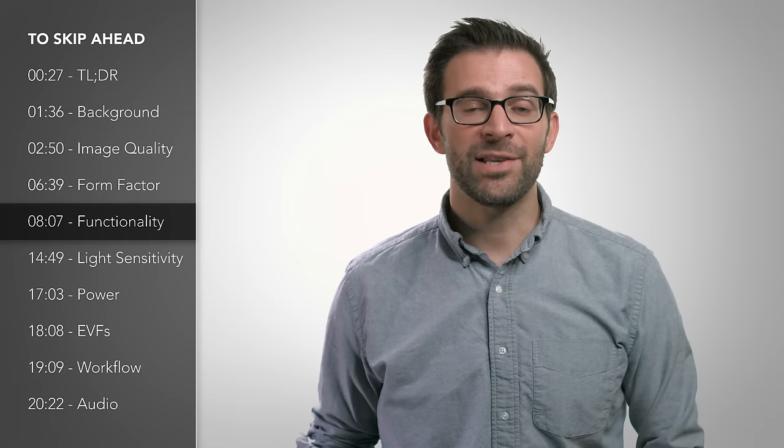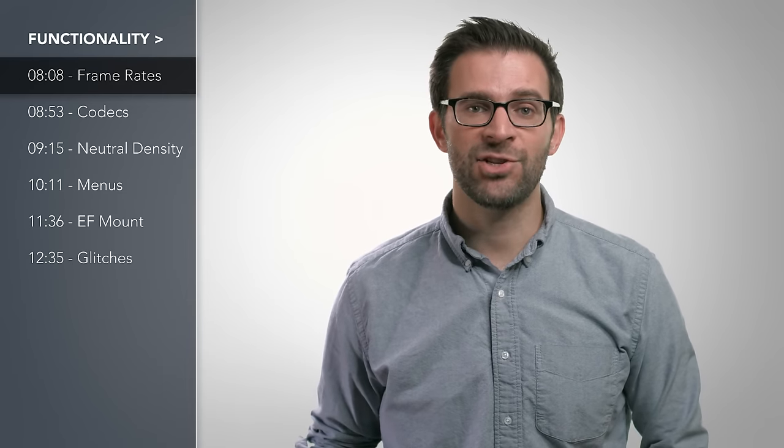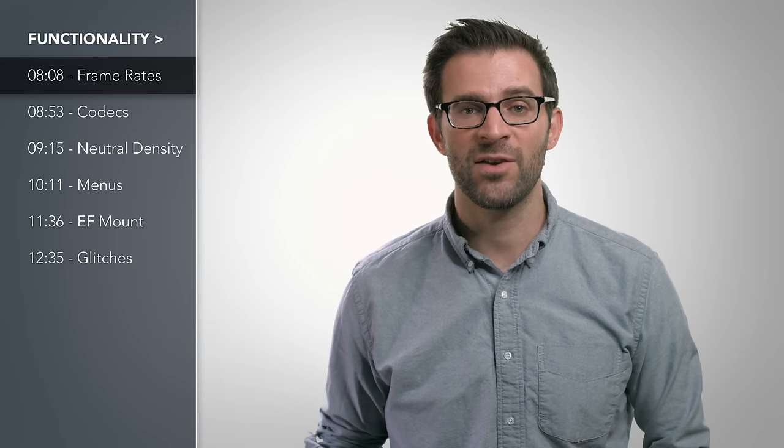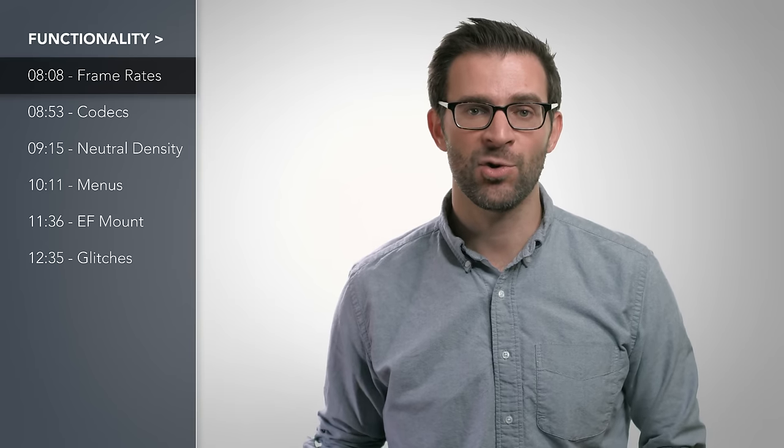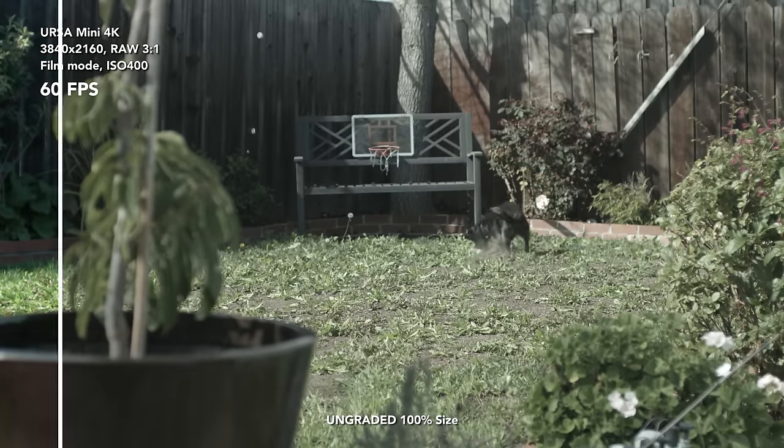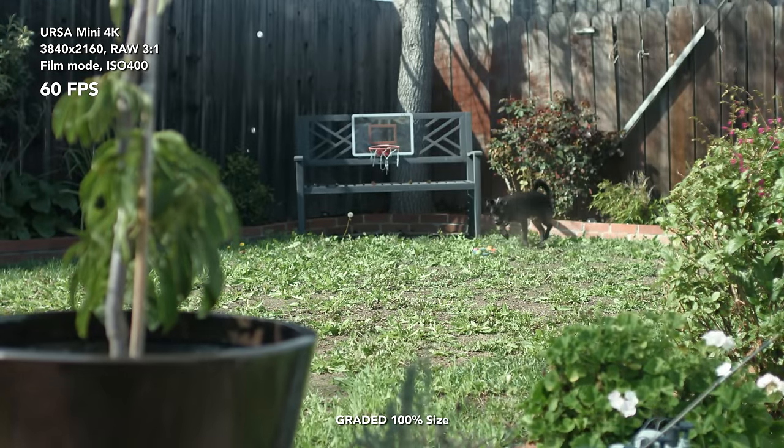Let's talk about frame rates. You get 60 frames per second in all HD and UHD flavors, including raw, and up to 120 frames per second in HD, though it is a windowed sensor. In the limited testing I've done, the results of these modes look fantastic, except at ISO 800. More on that later.